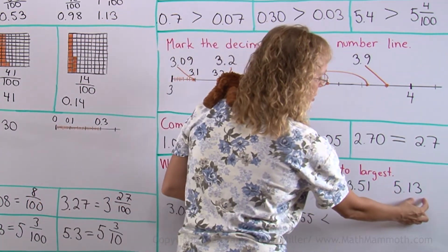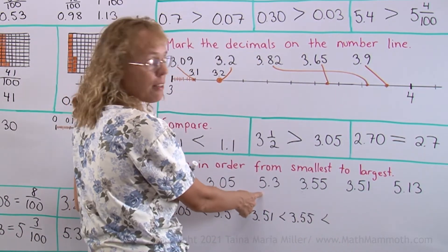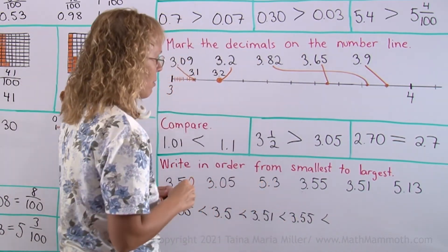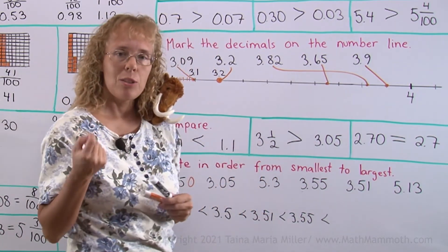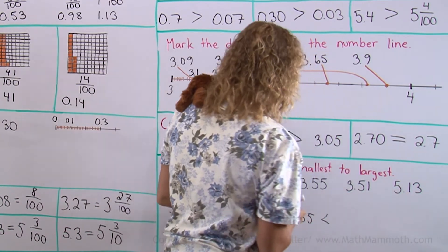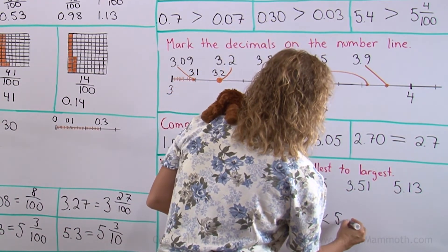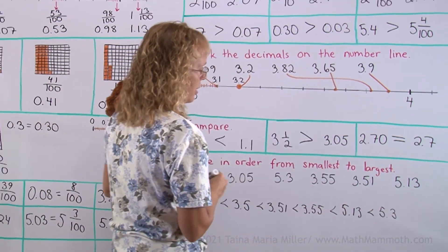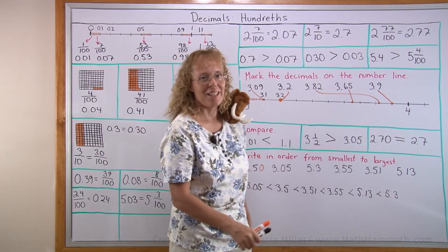This is 5 and 13 hundredths. This is 5 and it would have 30 hundredths. Okay. Remember that 3 tenths is equal to 30 hundredths. So I can see that this is more than this. So 5 and 13 hundredths is next. And lastly 5 and 30 hundredths, so 5 and 3 tenths. Okay. So we're all done now.